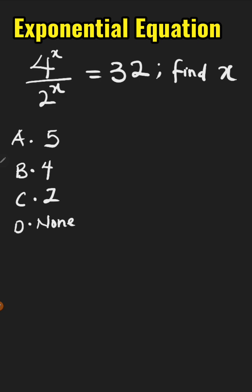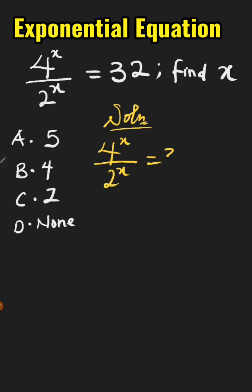The problem is: 4 raised to the power of x, all over 2 raised to the power of x, equals 32.